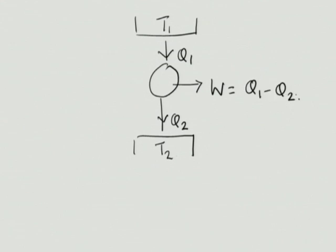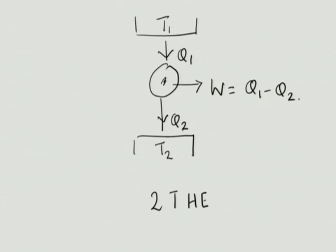I have just drawn a 2T heat engine. There are two temperature reservoirs, one at T₁ and one at T₂. This heat engine — the cyclic device in the middle — is interacting with one temperature reservoir with a Q interaction I am calling Q₁, and interacting with the other temperature reservoir labeled T₂ with a Q interaction I am calling Q₂. I have assumed Q₁ is being absorbed and Q₂ is being rejected, which is why I have put a minus sign. And W will naturally by the first law come out to be Q₁ minus Q₂. We are saying this is possible — such an engine can exist.